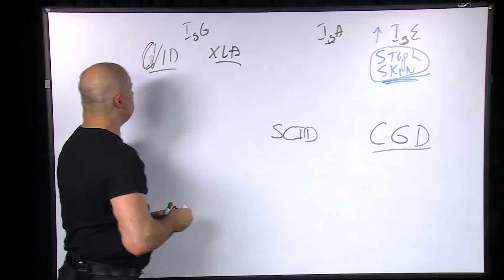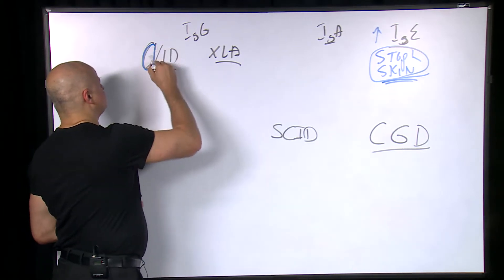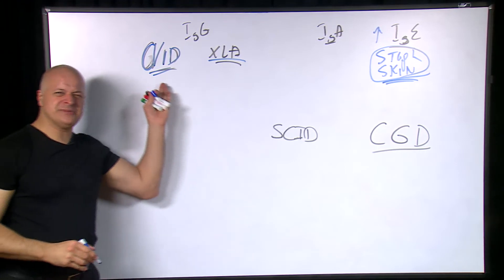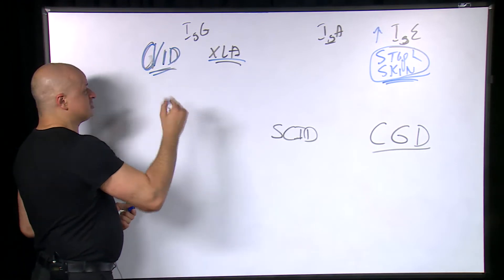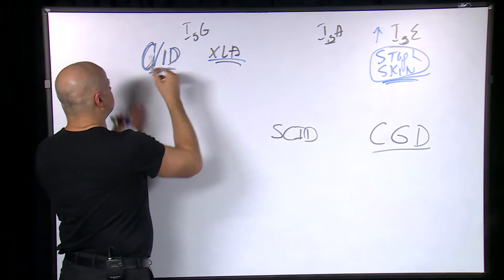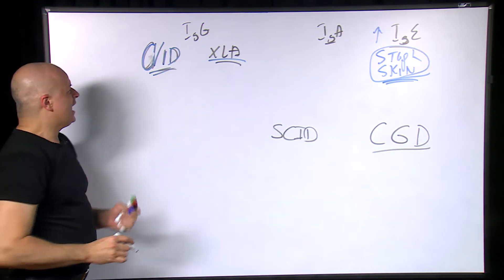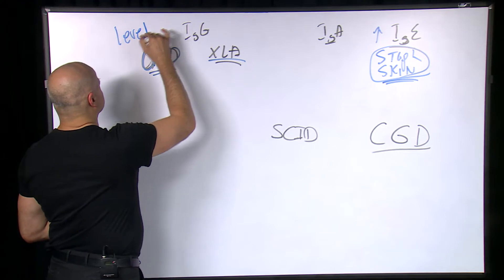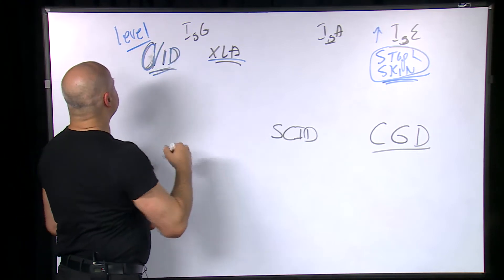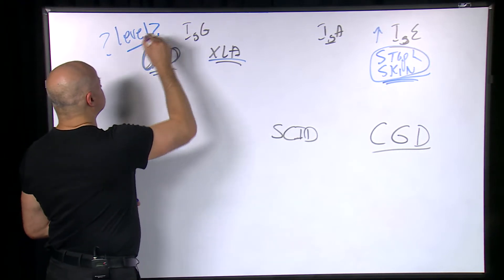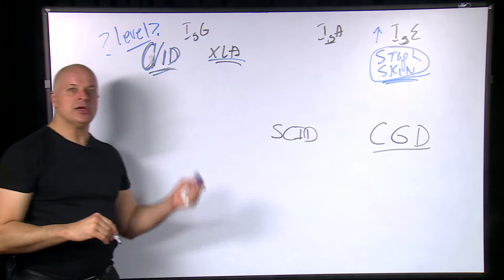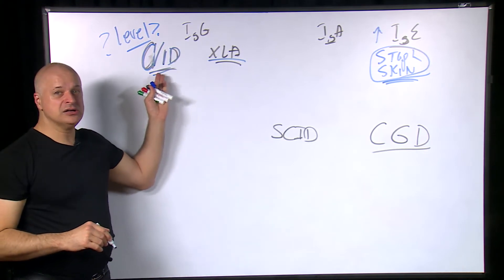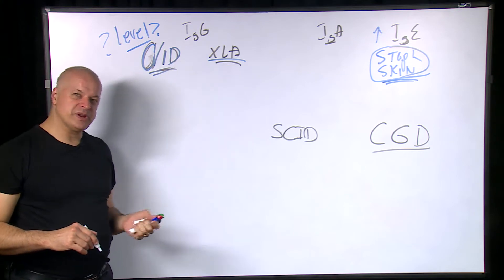Common variable immunodeficiency — why is it called variable? It's called variable because sometimes it presents at a young age, sometimes at an older age. Also the levels of IgE, IgA, and IgG are variable. That's why it's called variable — the presentation can be in the young, or sometimes at 25 or 30.